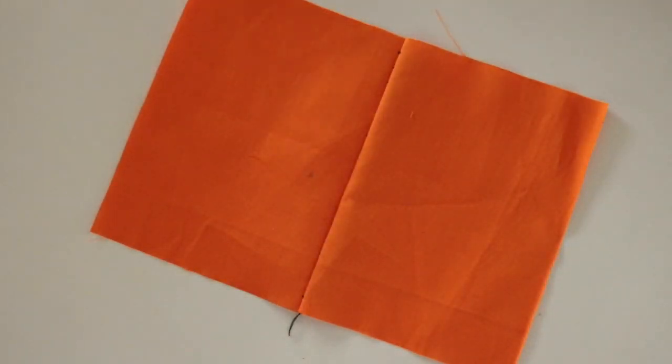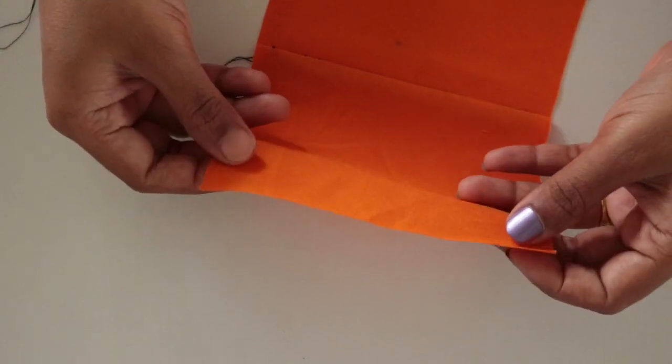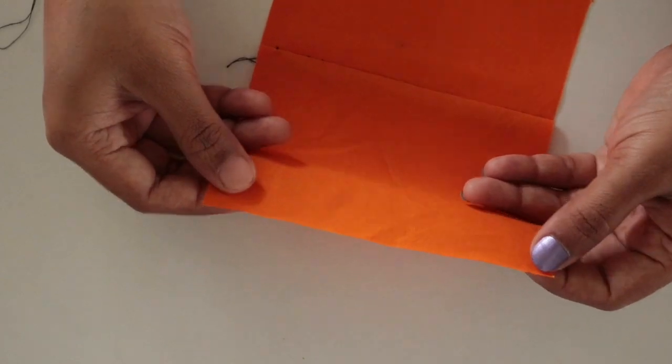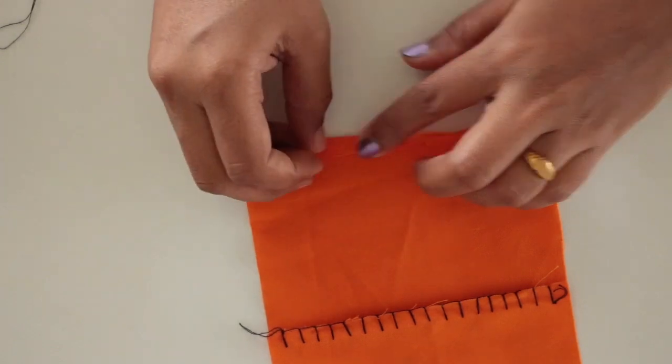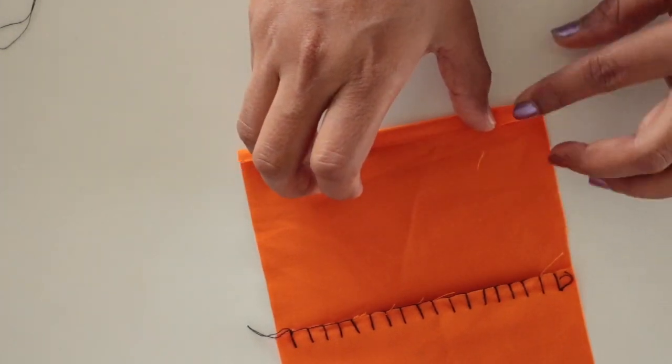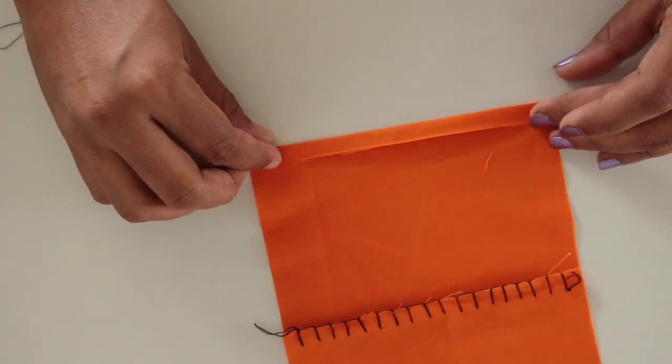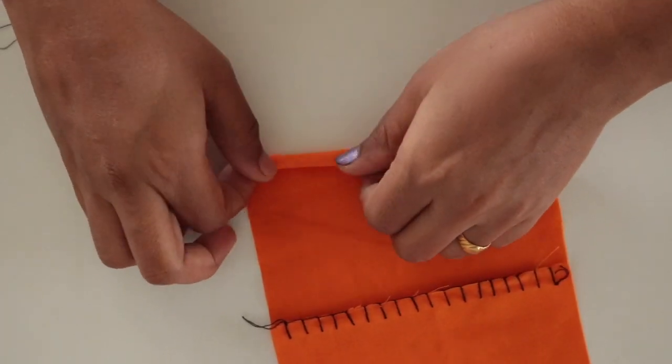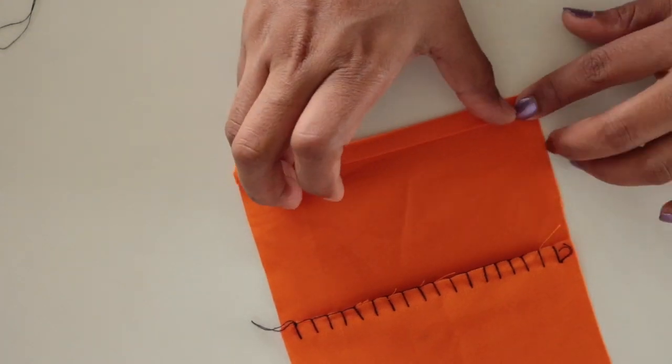Now we will see the second type of stitch. I will use the same fabric to demonstrate the second stitch. Take your fabric, fold it about quarter inch or one-eighth of an inch, then again fold it. You have to fold it double.